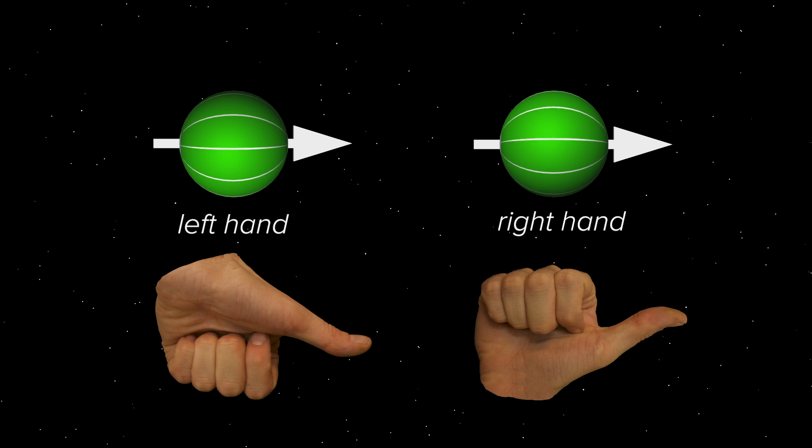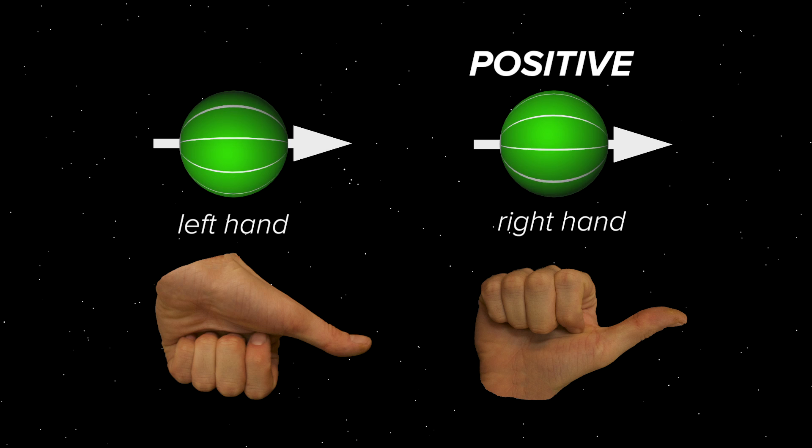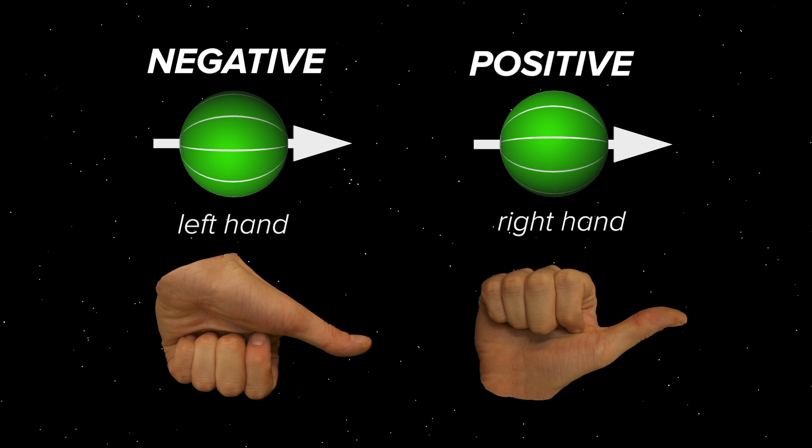If you take your two hands and point your thumb in the direction the electron is moving, the electron has two ways in which it can spin. It can spin in the direction that the fingers of your right hand wrap, or it can spin in the direction your left hand wraps. If the sense of the spin is like your right hand, the electron has a positive spin. And if the sense of the spin is like the fingers of your left hand, then the electron has a negative spin.